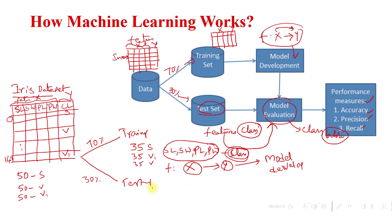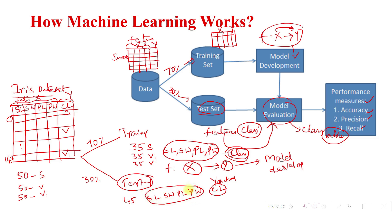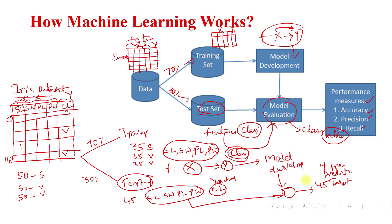The test data contains 45 instances with features: sepal length, sepal width, petal length, and petal width, along with their actual class labels (y actual). For model evaluation, we provide only the features of the 45 instances to the model, and the model predicts the 45 target variables, called predicted variables or y predicted.